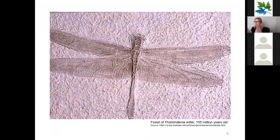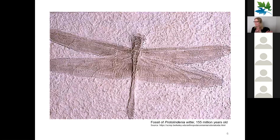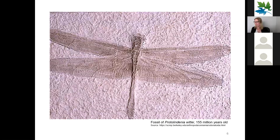There are a lot of similarities between the ancestors of Odonata and the modern-day Odonata we see today, although the ancestors were much larger. For example, Meganura had a wingspan of 75 centimeters. To give a perspective of how ancient these insects are, proto-Odonata evolved 100 million years before dinosaurs did. A fossil from 155 million years ago shows the similarities between Odonata throughout history and what we see as modern Odonata today.